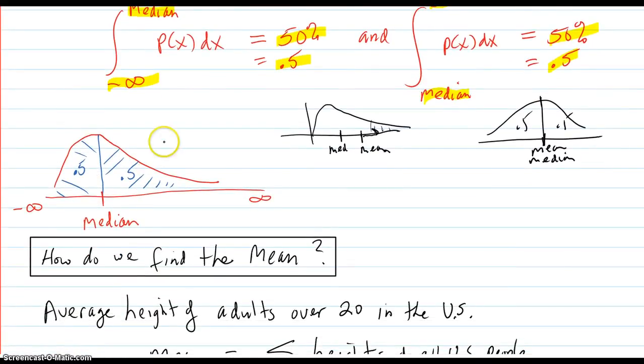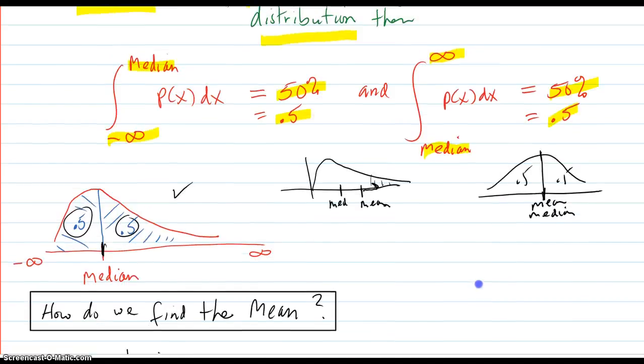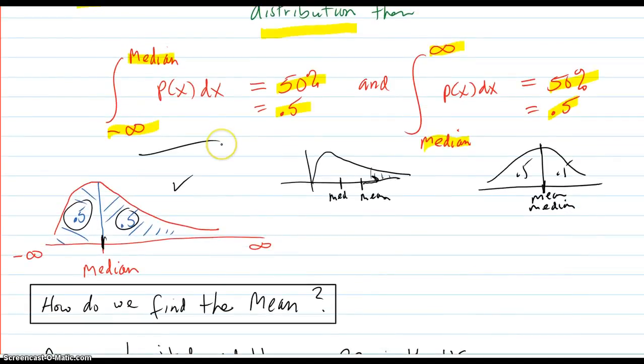So that was the general picture for the median. Wherever it is, half of the area is below the median and half of the area is above. So that's where you get your calculus formulas for that.